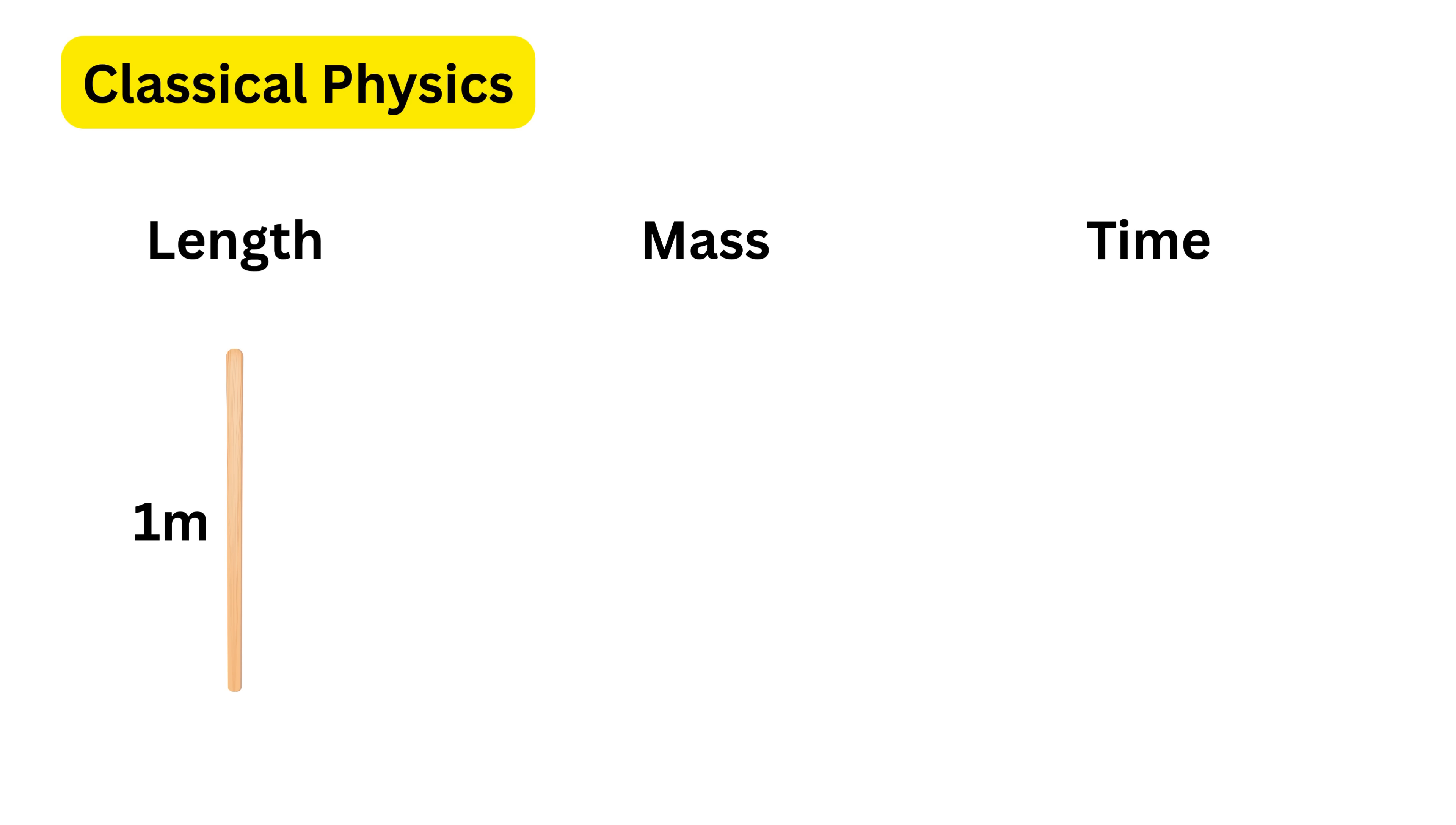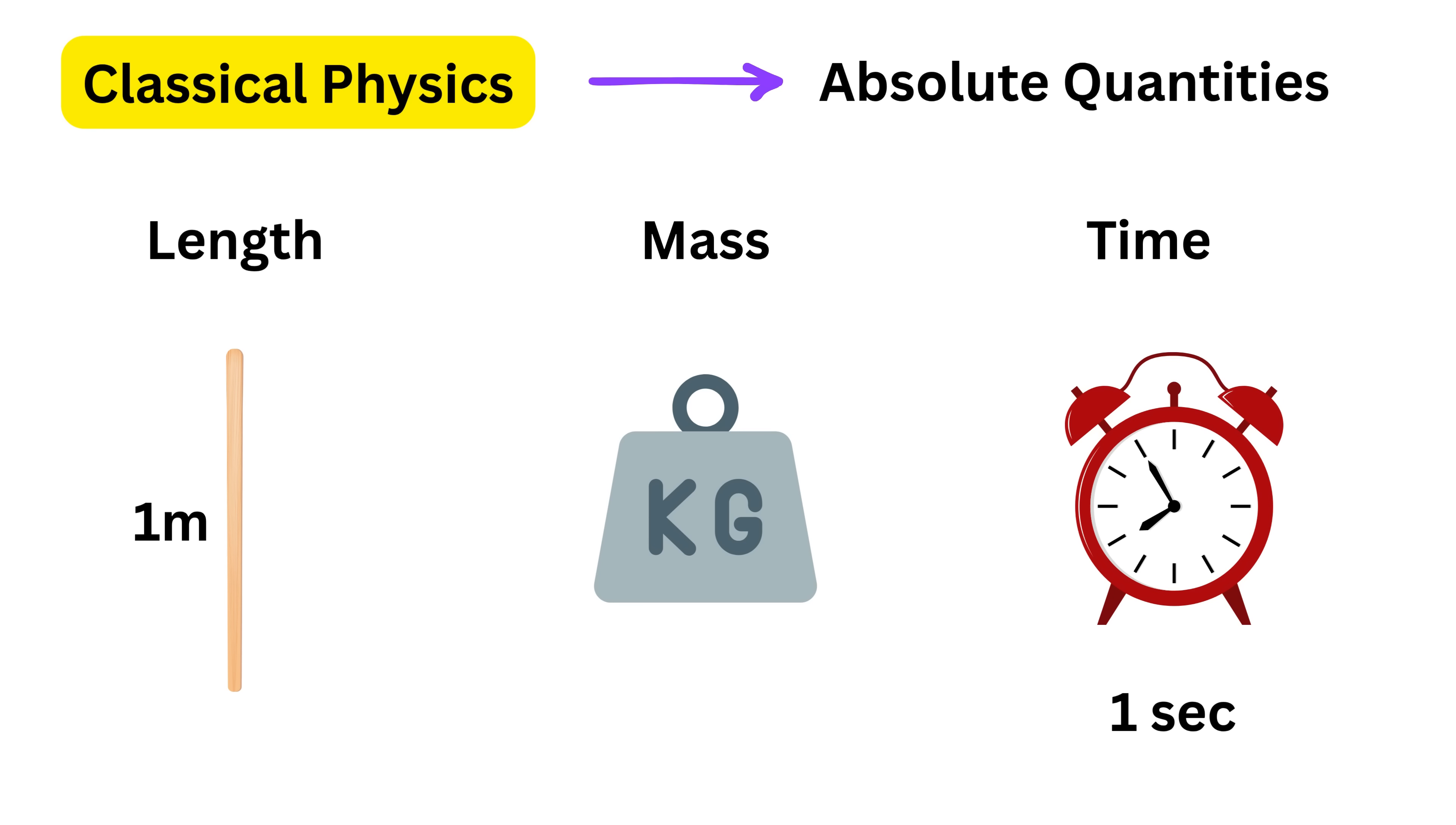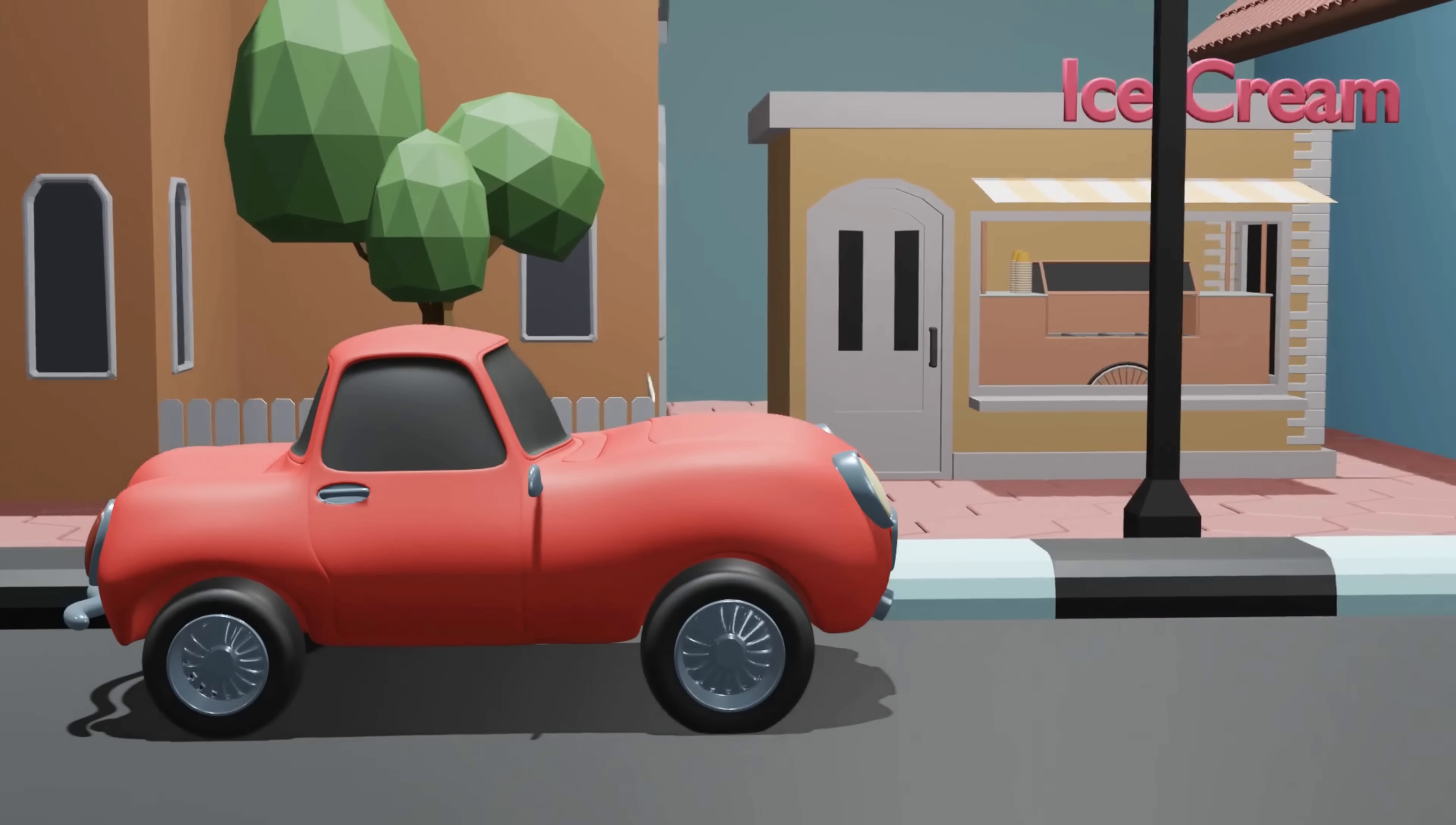That means a one meter stick will always be one meter for everyone. A one kilogram block will always be one kilogram for everyone. And one second on a clock was the same for everyone, no matter where they were or how fast they were moving. Scientists thought these were absolute quantities. This made sense in everyday life and matched all the experiments done at ordinary speeds.